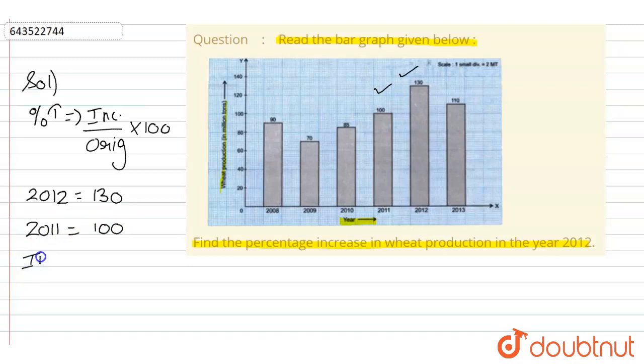Let us first find the increase, which will be 130 minus 100, that is 30. So this is the increase, this is the original. Let us find the percentage increase.